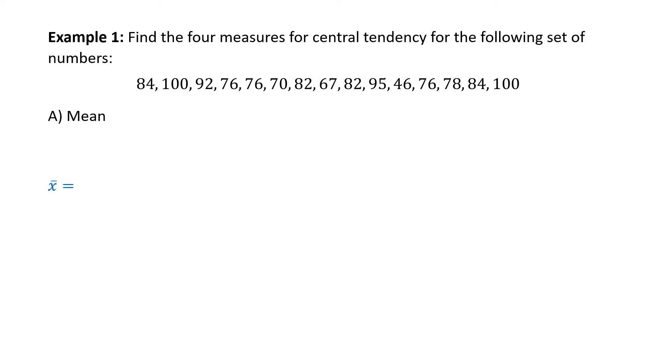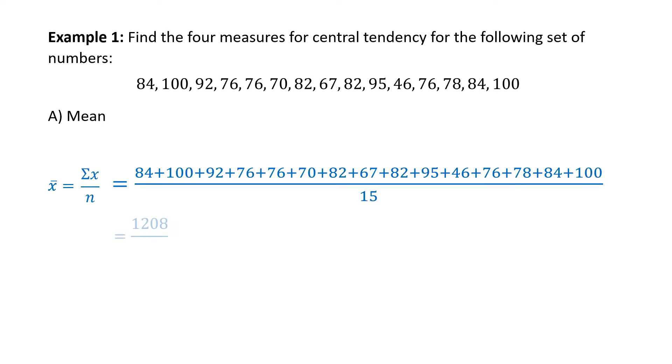The mean is given by the formula, the summation of x divided by n. By that, we want to add up all of the numbers I just read and divide that by the total number of items. Count them and you'll find out there were 15 pieces of data. Adding up the terms in the numerator, the sum is 1208. We divide that by 15, which gives us x-bar is approximately 80.533.